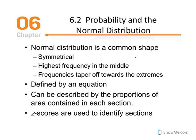The exact shape of the normal distribution is specified by a mathematical equation relating each x value (the score) with each y value (its frequency). Each normal distribution can be described by the proportions of area contained in each section. When we refer to area, we're talking about sections of the normal distribution — for instance, the proportion above the mean, below the mean, above an extreme score, below an extreme high score, or below an extreme low score. Area pertains to a certain section or probability of a distribution.